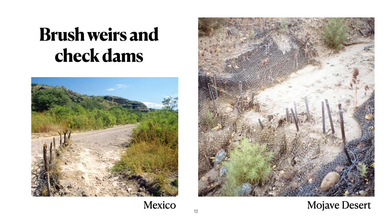In Mexico, often the brush weirs are not all the way across the watershed or channel, but are used to divert water into the farm fields. They'll wash out many times, but they're easily replaced, and they provide a valuable source of water for the farmers. On the right we have the Mojave Desert — a much simpler check dam built in an erosion gully, already full of sediment, and the added water it captures is helping plants to grow.